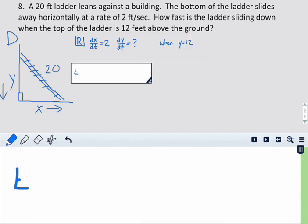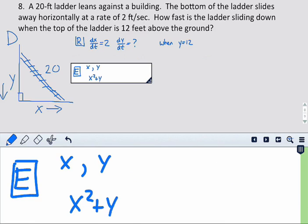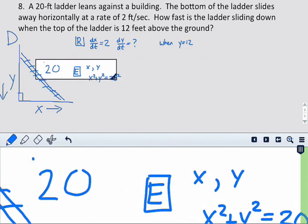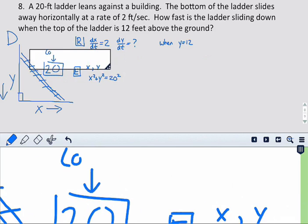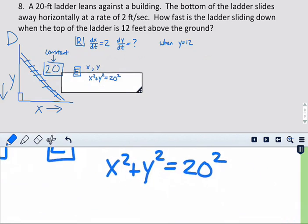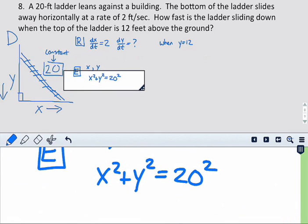Next, let's go ahead and find our equation, and we want to be able to come up with an equation with X's and Y's in it. And so we can actually use Pythagorean theorem here. So x squared plus y squared equals 20 squared. And you'll notice that 20 is constant because the height of the ladder is not changing. So when you write your equation, just go ahead and plug your constants in, things that never change. If it is changing, like the X and the Y, then you leave that as a variable.